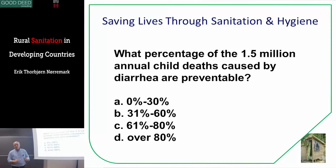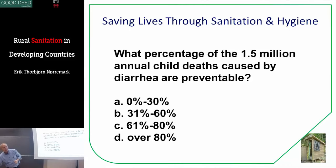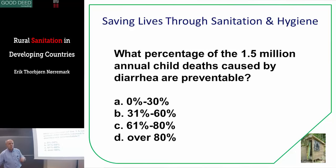Now, we have a small test here. What percentage of the 1.5 million annual child deaths caused by diarrhea are preventable? If you actually do the proper interventions, 90% of the children dying from diarrhea now do not need to die. That's very significant, so we have to learn how to do the right thing.